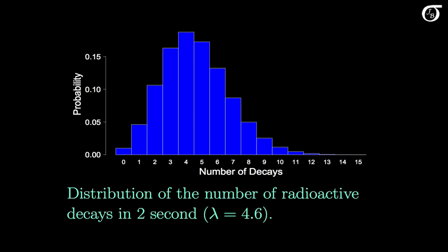If we calculate the probabilities for the different possible values of x and plot them, we get this: the probability distribution of x — a Poisson distribution with lambda equal to 4.6. The probability that x equals 3, which we just calculated to be 0.163, is shown here. We can see that x takes on possible values 0, 1, 2, and up. The plot is truncated at 15 since the possible values go off to infinity, but the probabilities start getting very very small. For a Poisson distribution there is no upper bound on the values x can take on.